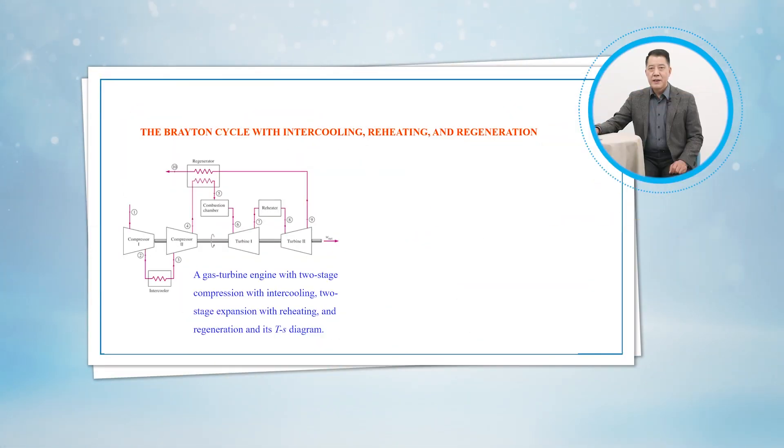A schematic of the physical arrangement and the T-S diagram of an ideal two-stage gas turbine cycle with intercooling, reheating, and regeneration are shown in Figures 10-34 and 10-35.